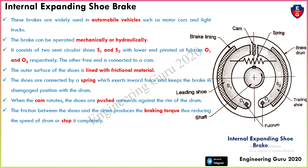The braking torque thus reduces the speed of the drum or stops it completely. When the cam pushes the shoes outward against the rim, friction is produced between the shoe and the drum, generating braking torque which reduces speed and stops the drum completely.